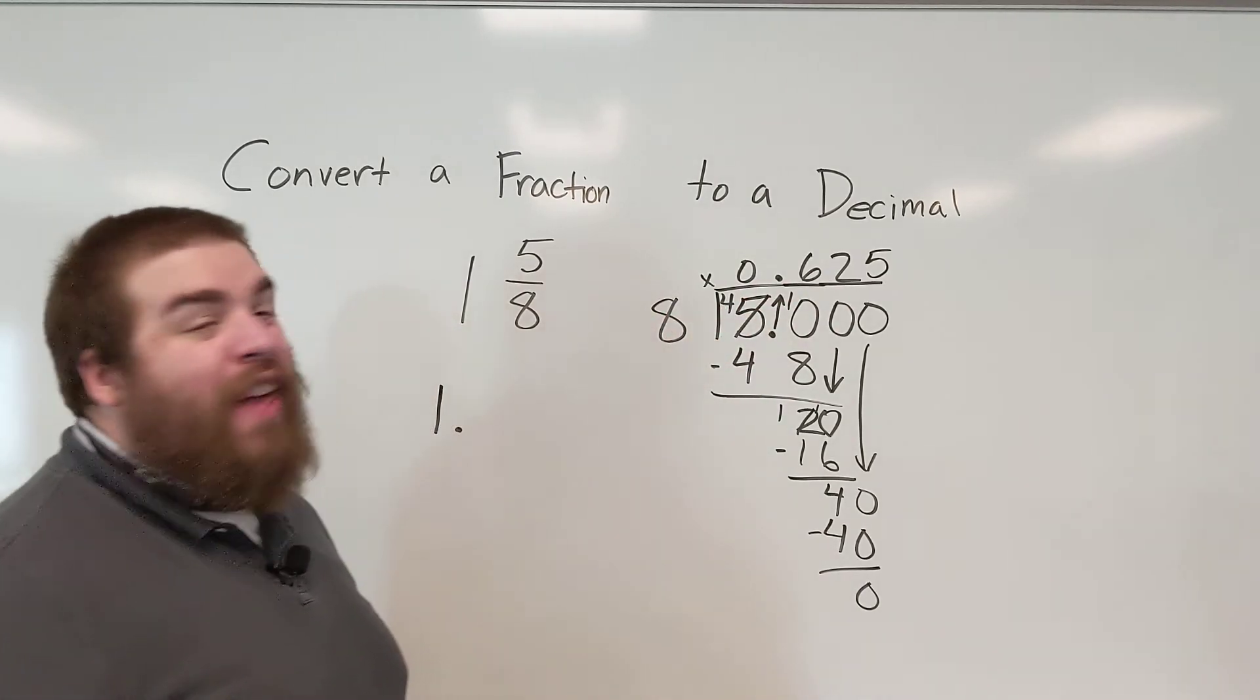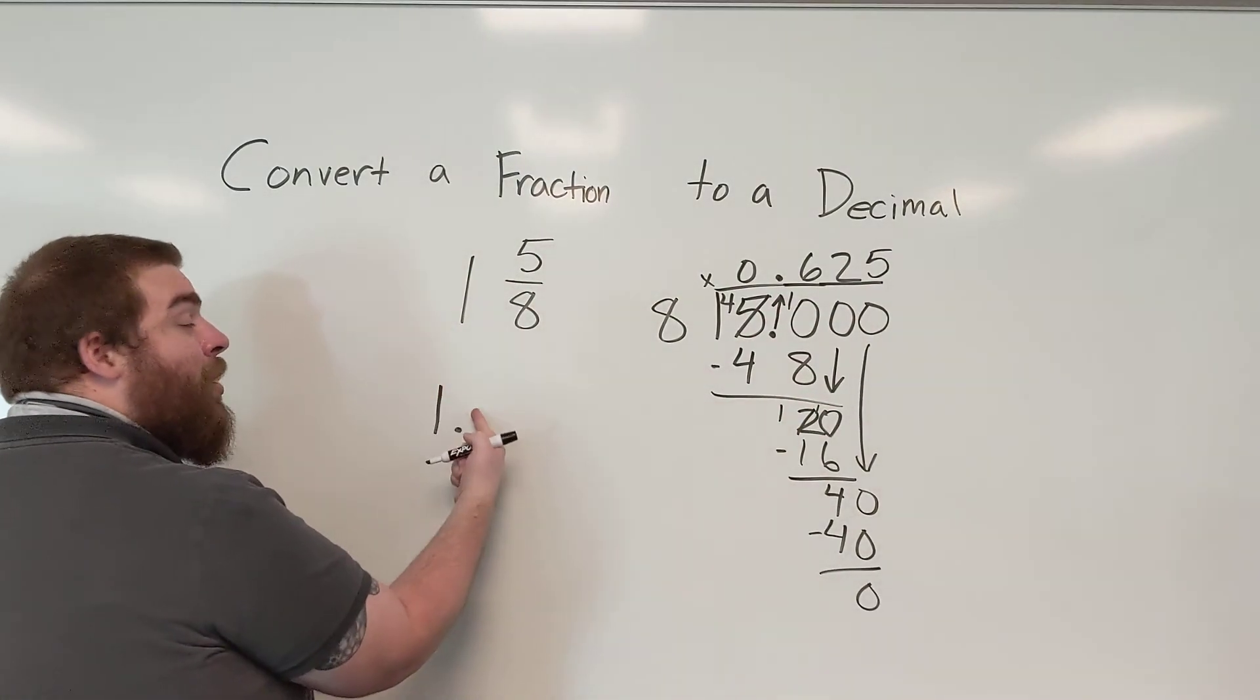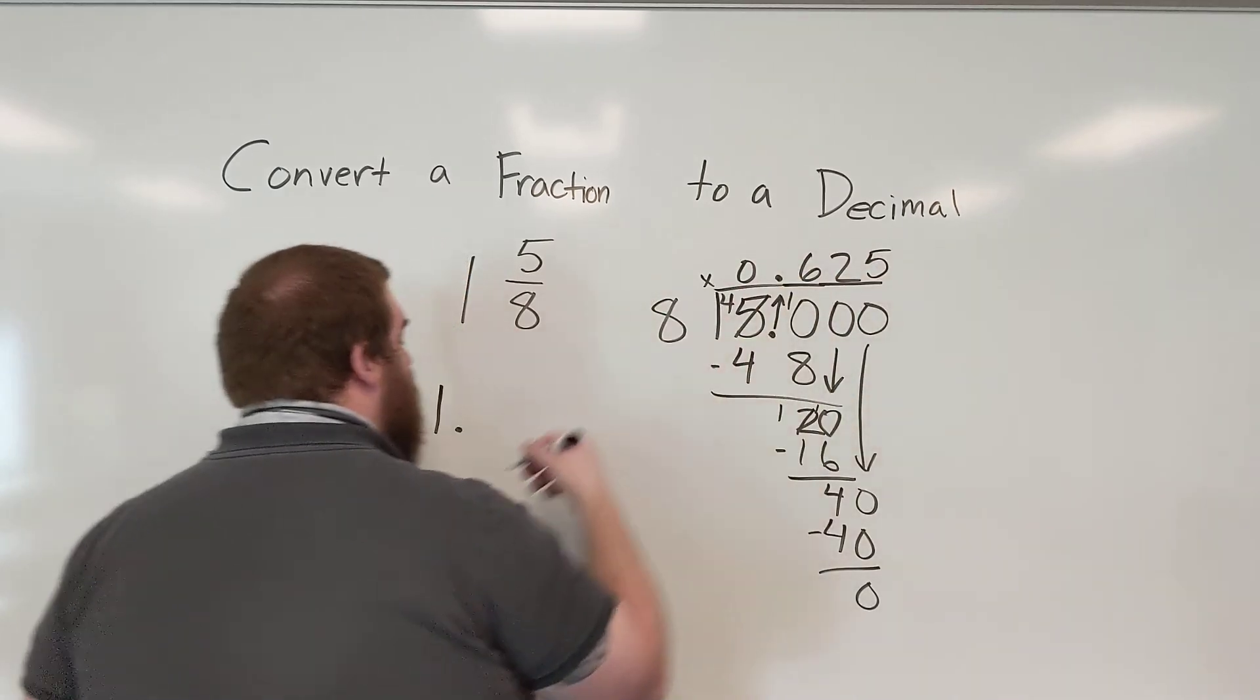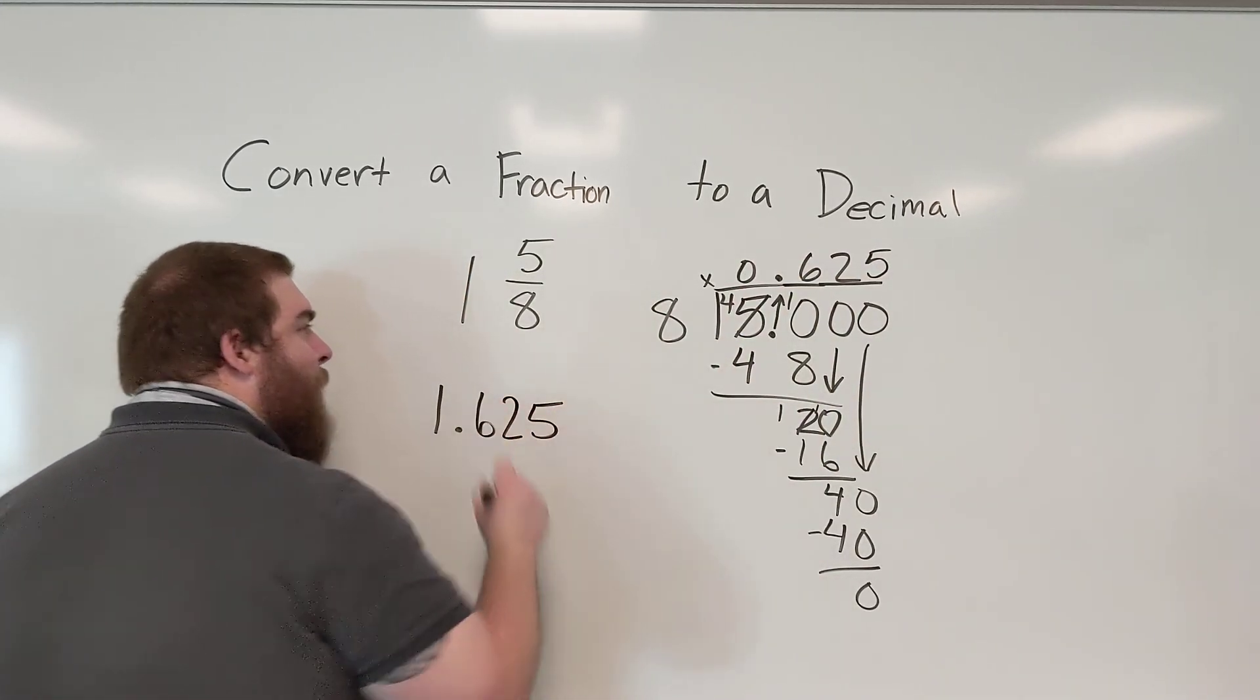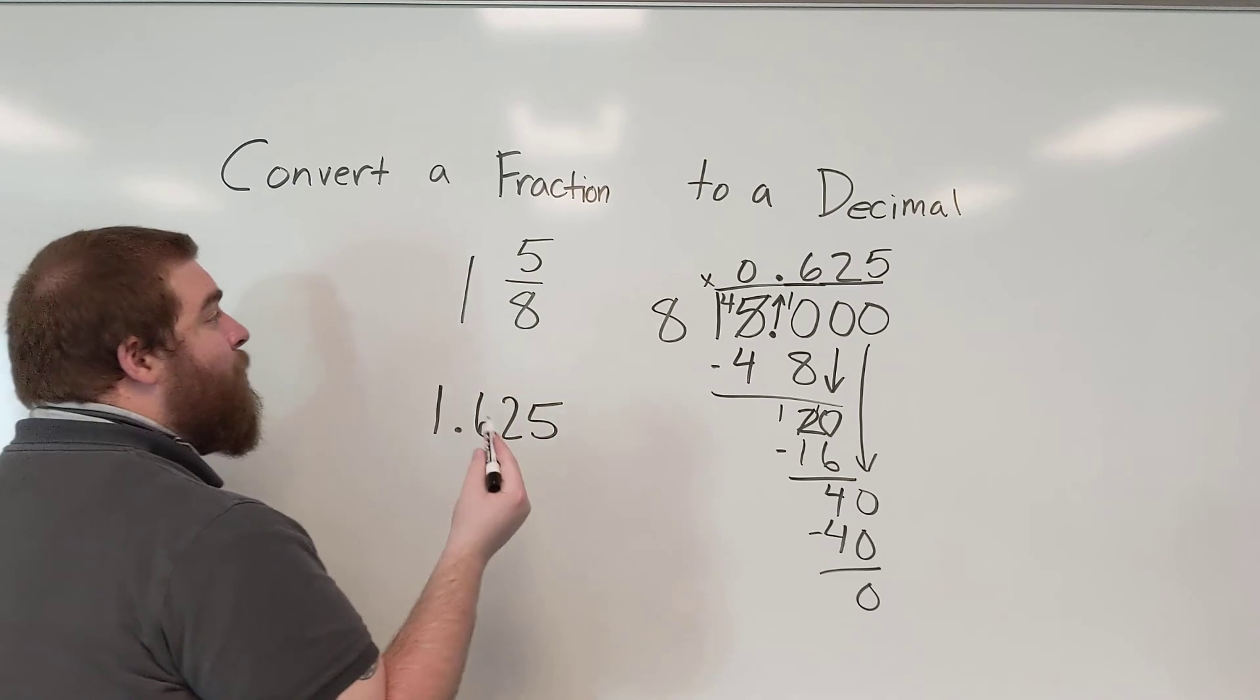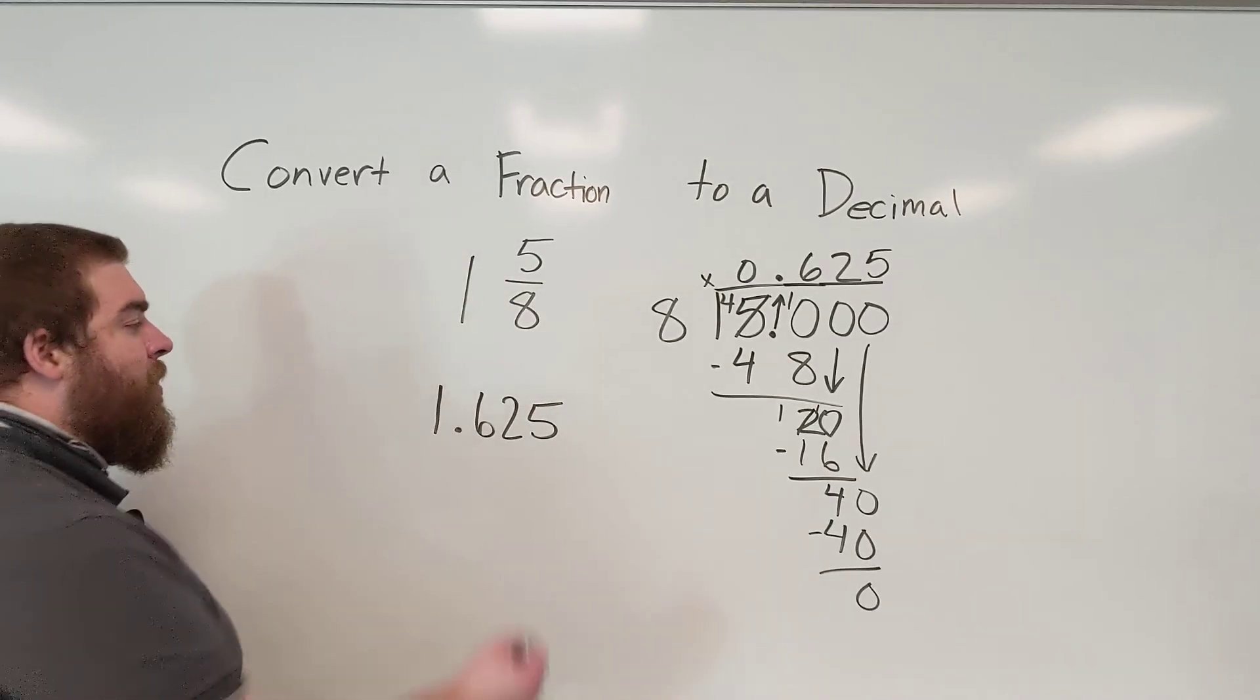So what we're going to do is we're going to add this decimal here to the end of our numbers that we're working with over here. Remember 1 always stays the same. 5 eighths becomes this decimal number over here. So all I need to do is just add the digits that came after the decimal point in my division problem. So therefore when we convert a fraction to a decimal, that mixed number 1 and 5 eighths converts to 1.625 thousandths.